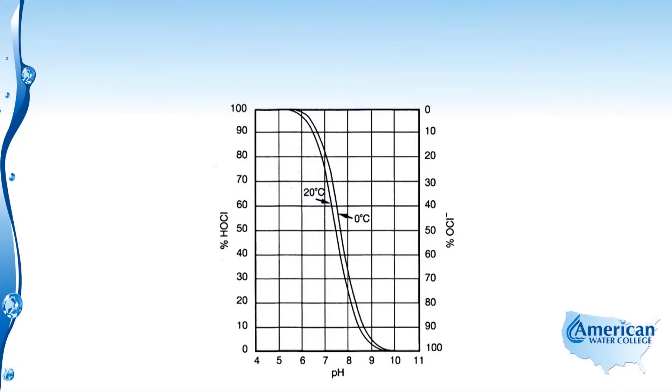At the bottom of the graph we have pH, and on both sides we have percent of hypochlorous acid on the left and percent hypochlorite on the right. Then we have these two lines in the middle to represent temperature.